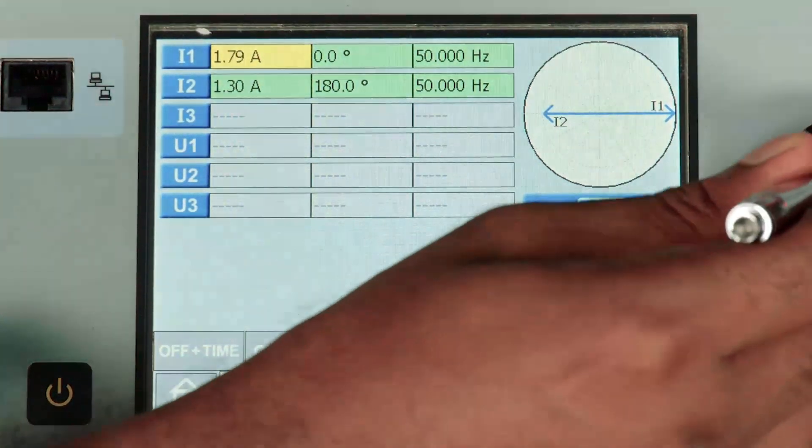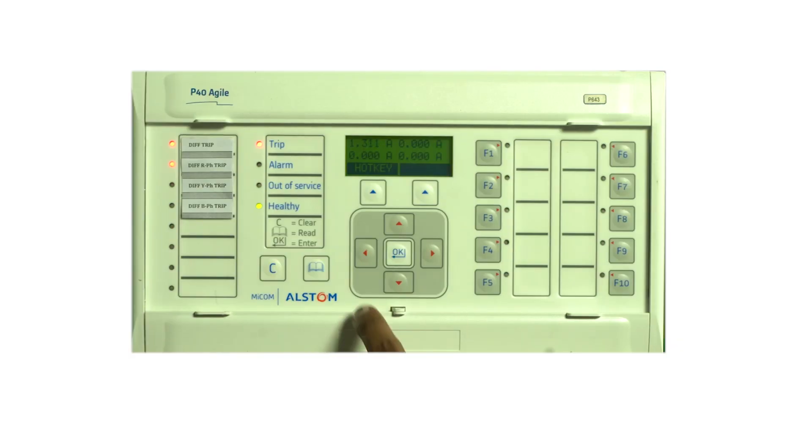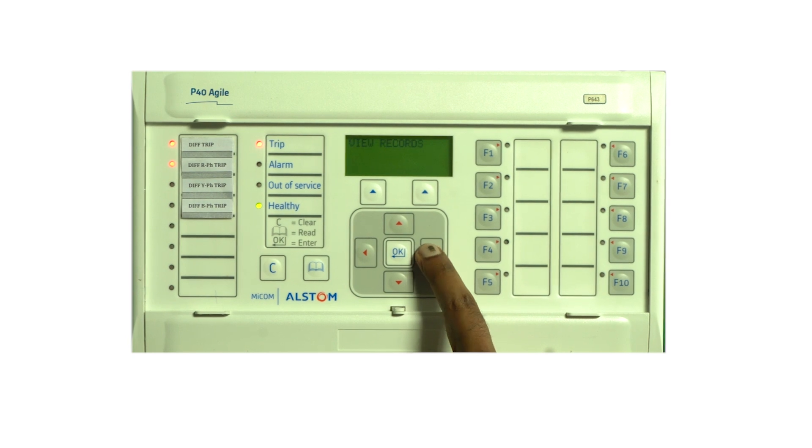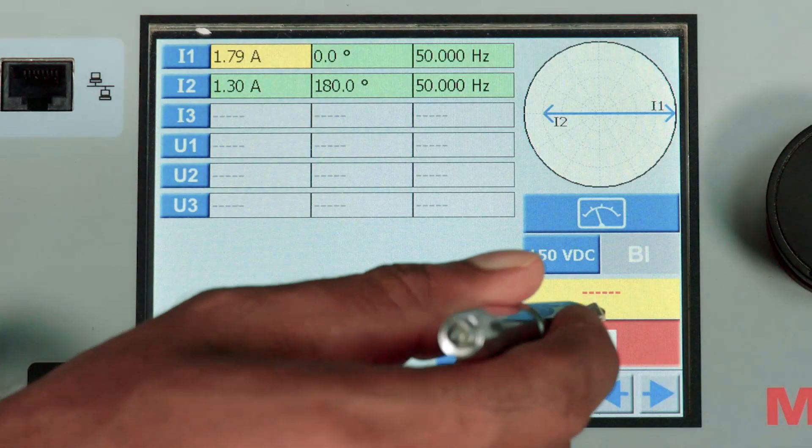By increasing the current to 1.79 amps. So let me check the measurements. For the differential current, ID is equal to 0.376 and the I bias current is 1.185. Let me switch off the kit.